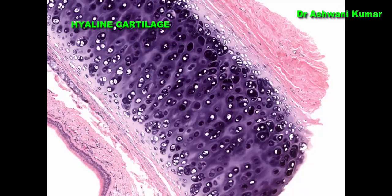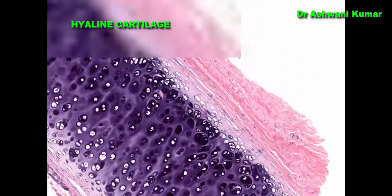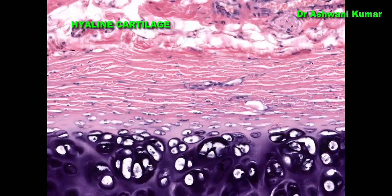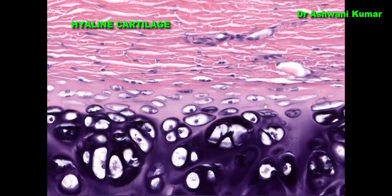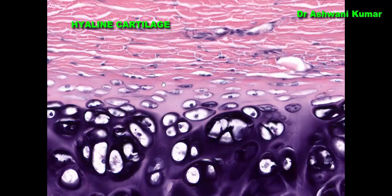This is the histological section of hyaline cartilage taken from the trachea. Looking at the perichondrium region: it is divided into two parts. The outer fibrous layer has type 1 collagen fibers, and you can also appreciate blood vessels in this layer. The inner cellular layer — the inner chondrogenic layer — contains fibroblast-like cells that can differentiate into chondroblasts, initiate matrix production, and become immature chondrocytes.